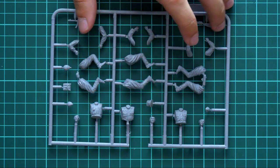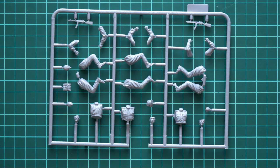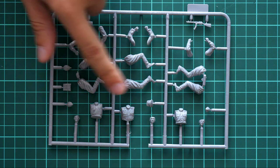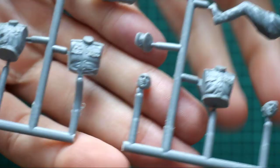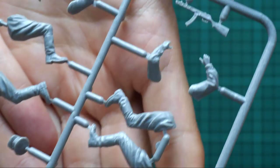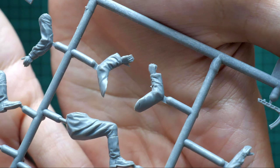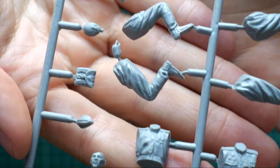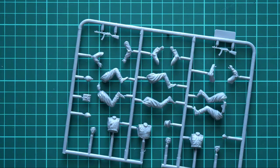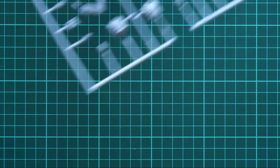This is the last gray plastic sprue with parts for three more figurines. The parts division is absolutely the same as the previous sprue. We have one-piece torsos again. Here you can see legs, hands, machine guns, and various accessories which can be placed on the figures.